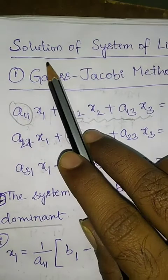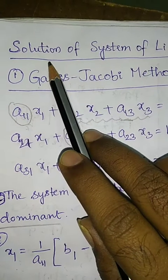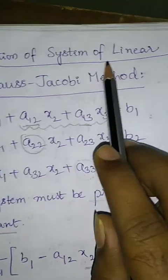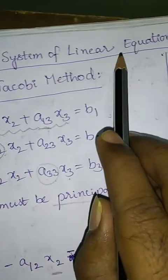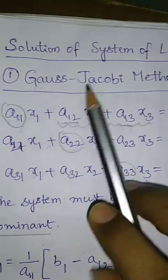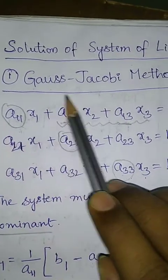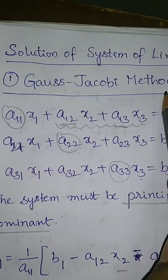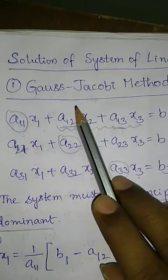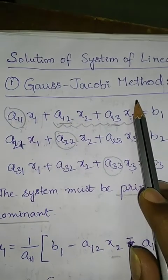In today's lecture we will discuss a solution of system of linear equations using the Gauss-Jacobi method. To use the Gauss-Jacobi method, the system must be principal dominant.